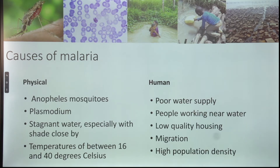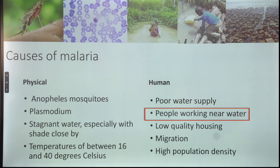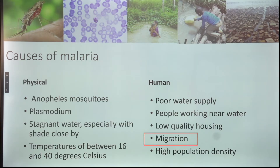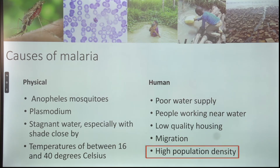Moving on to human factors. Several of these — such as a poor water supply and people working near water — are to do with how much time people spend near stagnant water, making them more likely to be bitten. Low-quality housing also makes it more difficult to keep mosquitoes out at night. Others relate to the movement of Plasmodium: once a person infected with malaria travels to a new area, they may be bitten by a mosquito, spreading Plasmodium into that new area. Finally, a higher density of humans in an area makes it easier for malaria to spread, as most other animals are not hosts for malaria in the way that humans are.